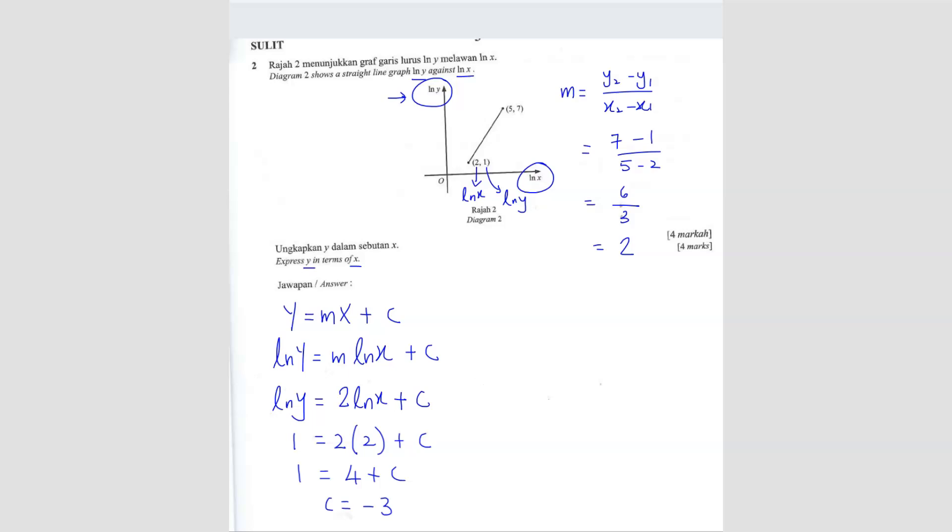If I rewrite the equation, it's going to be ln y equals 2 ln x minus 3. The question is asking to express y, not express ln y. They're asking for express y. So if you want to express y, you have to shift the ln value. If I write in log form, ln is actually the same as log e, log base e. So when you shift the ln over, it becomes y equals e power 2 ln x minus 3.